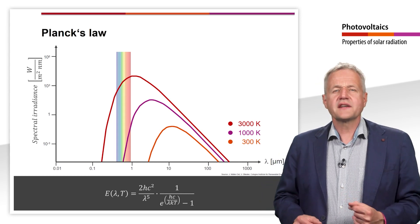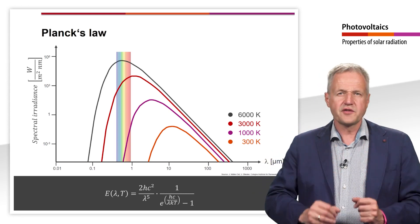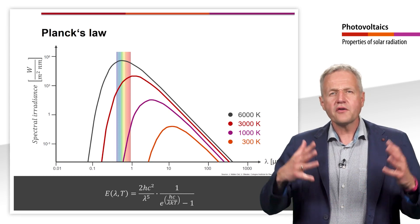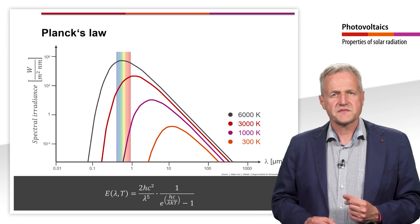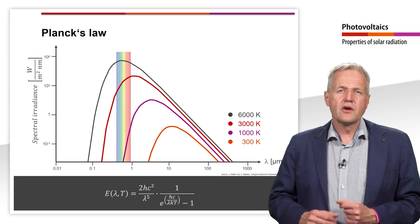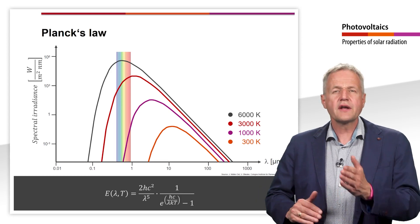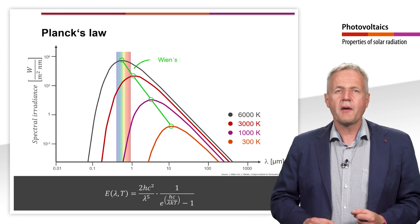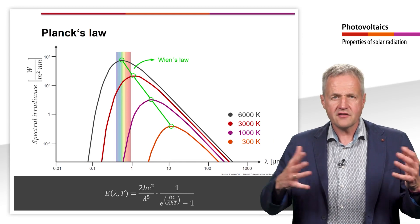Not until at a temperature of 6000 K, the radiation maximum is exactly in the visible range of the spectrum. This is about the temperature of the sun's surface. If we look at the position of the radiation maximum at different temperatures, we can already guess from this figure that there is a linear relationship between radiation maximum and blackbody temperature. This relation is described by Wien's law.